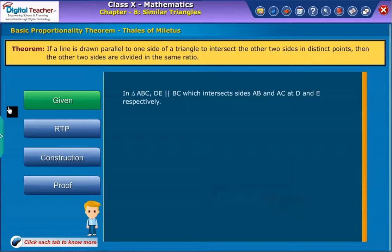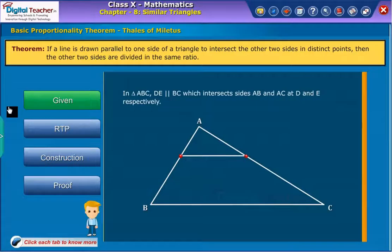Given: In triangle ABC, DE is parallel to BC, which intersects sides AB and AC at D and E respectively.